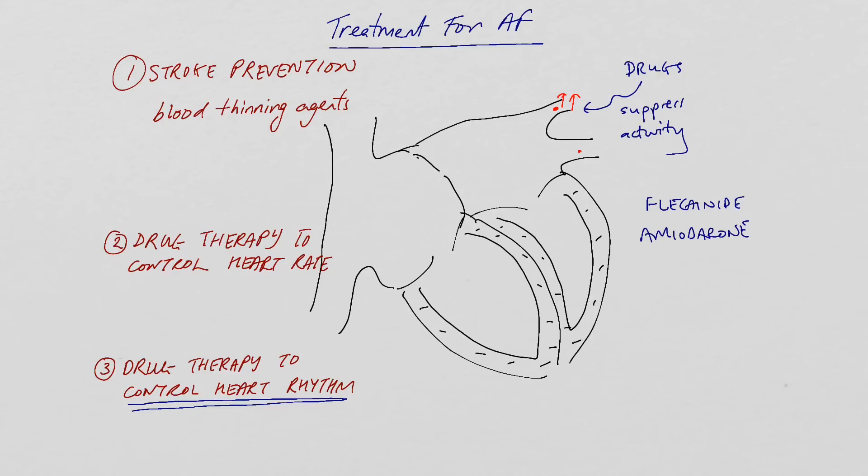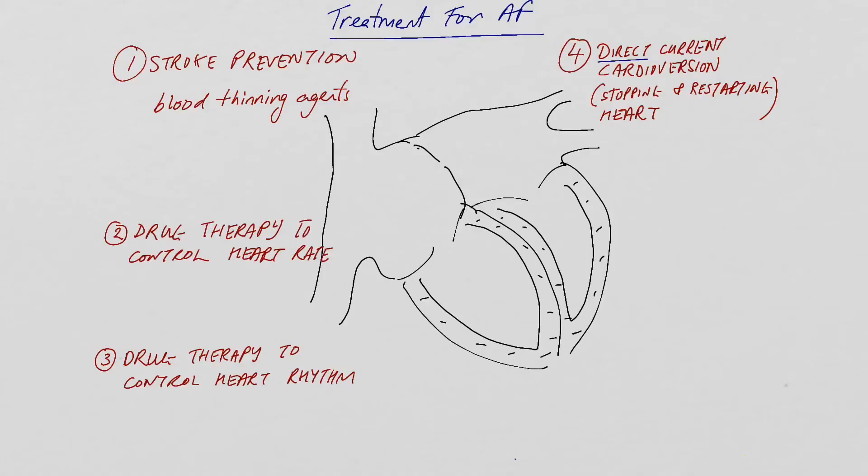One of the other treatment options that could be used is a cardioversion. This is an electrical current which is passed through your chest wall in order to stop and restart the heart. A cardioversion might be suggested by a doctor if you have very highly symptomatic atrial fibrillation or indeed if the drugs that have been given don't appear to have improved your symptom profile.